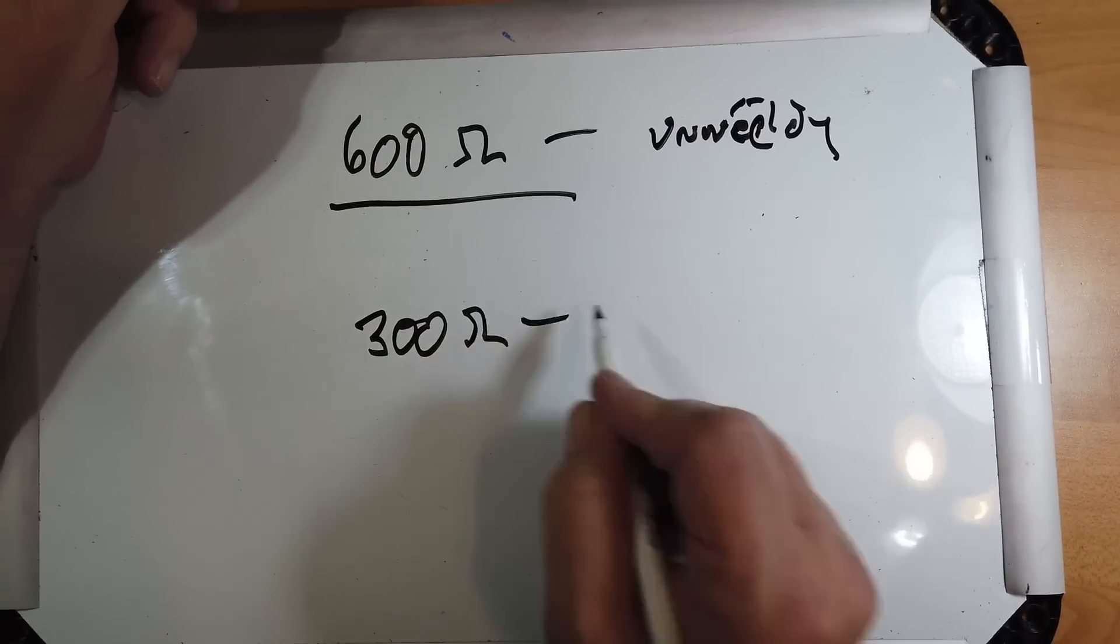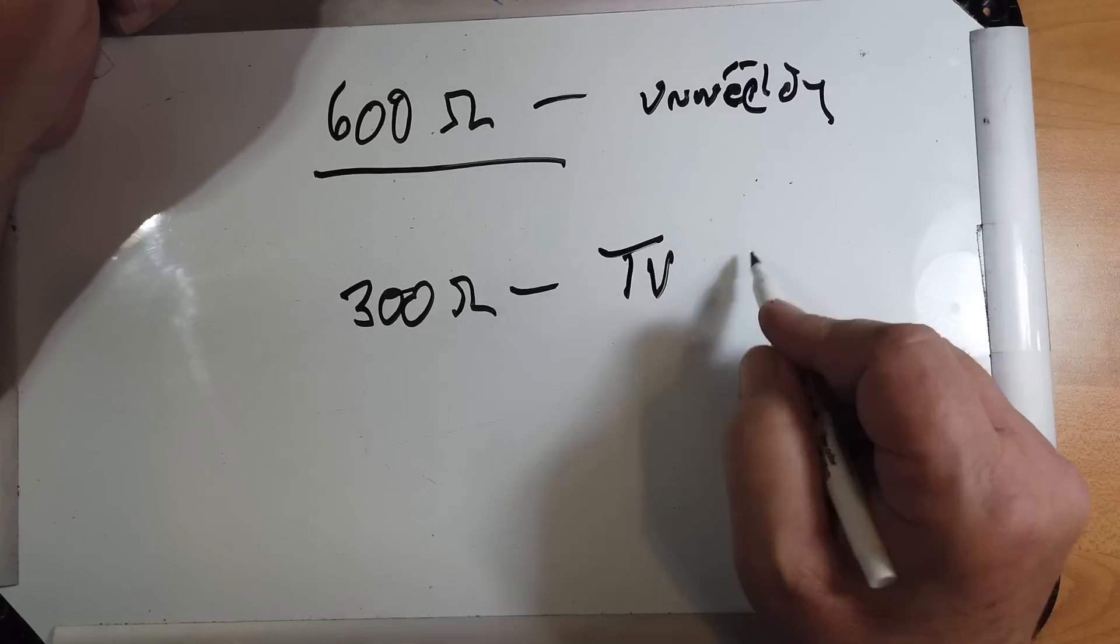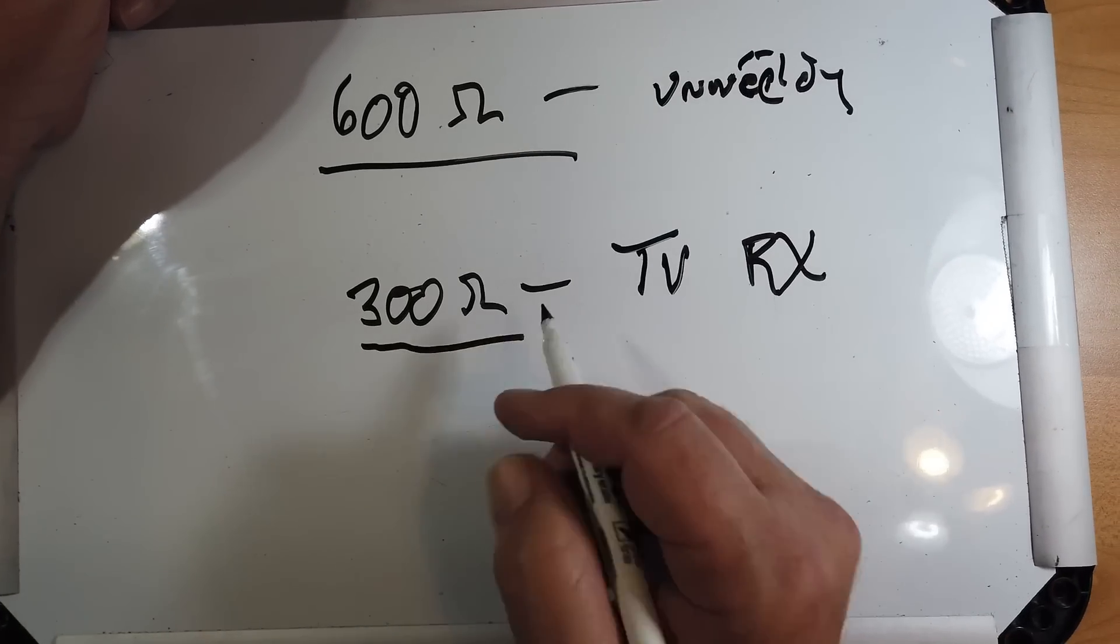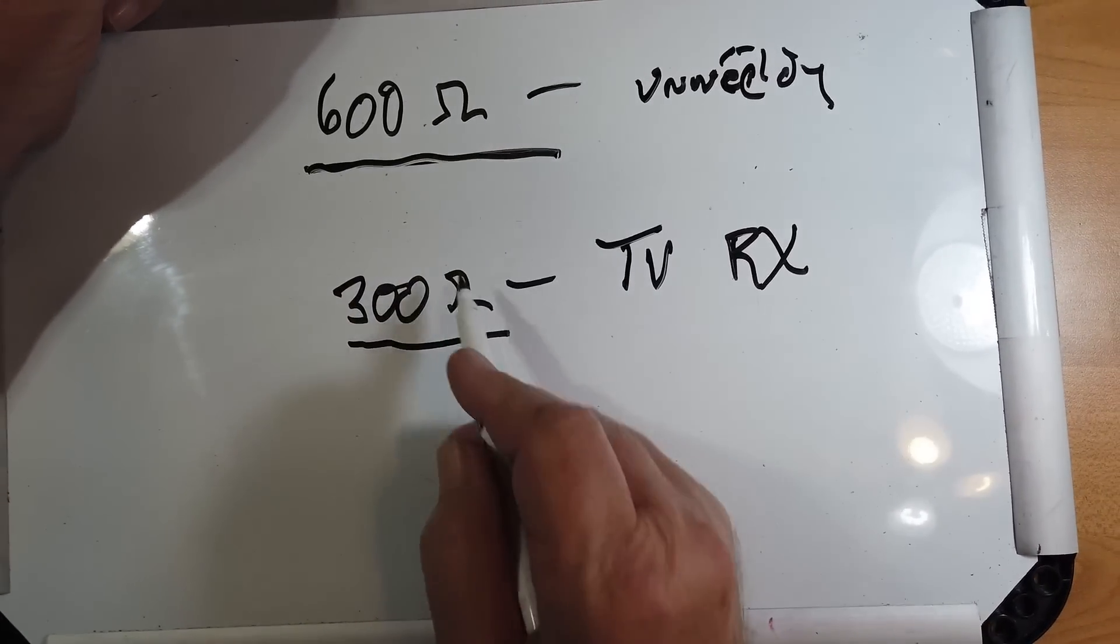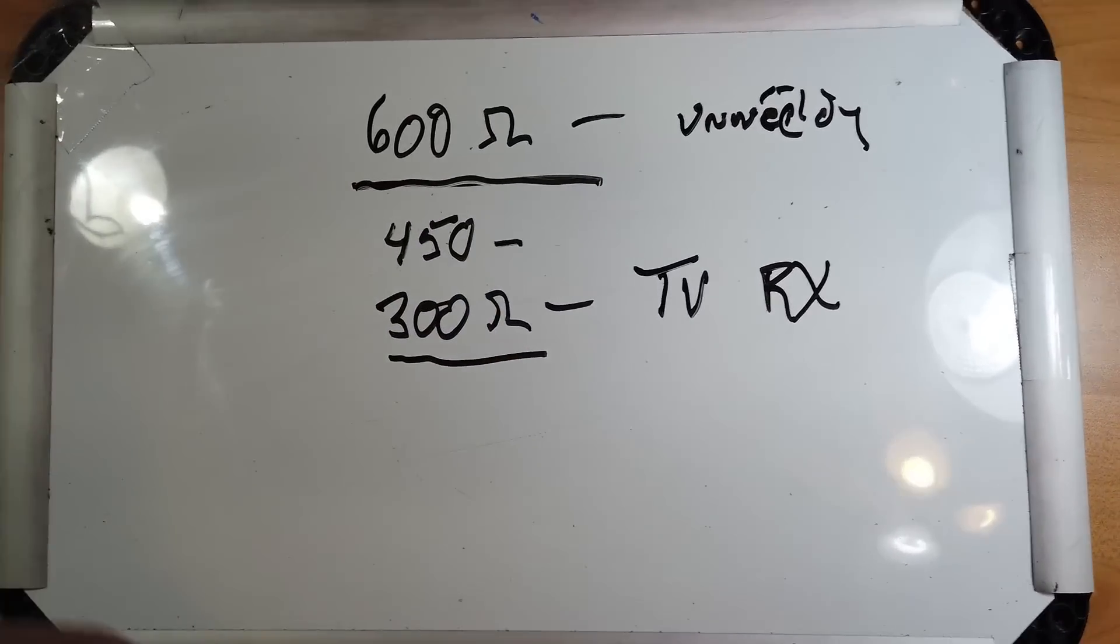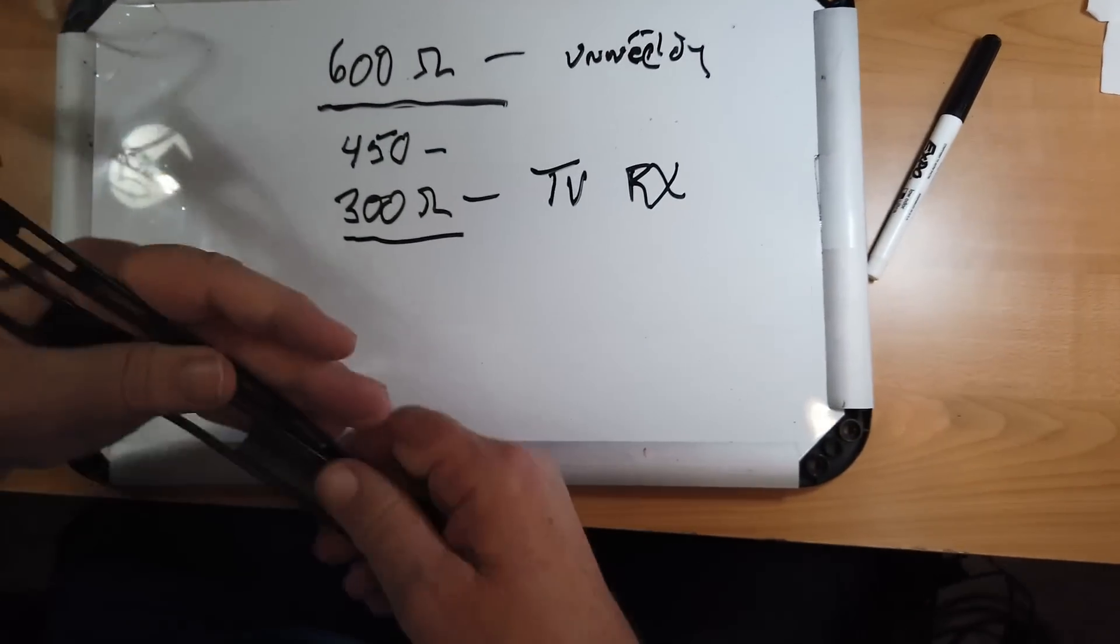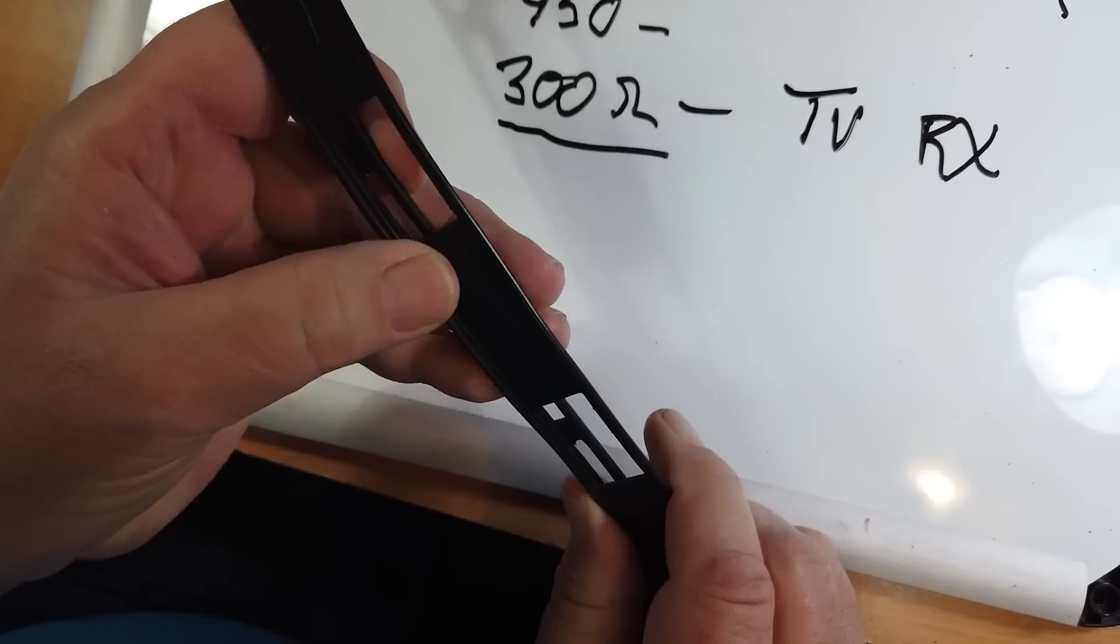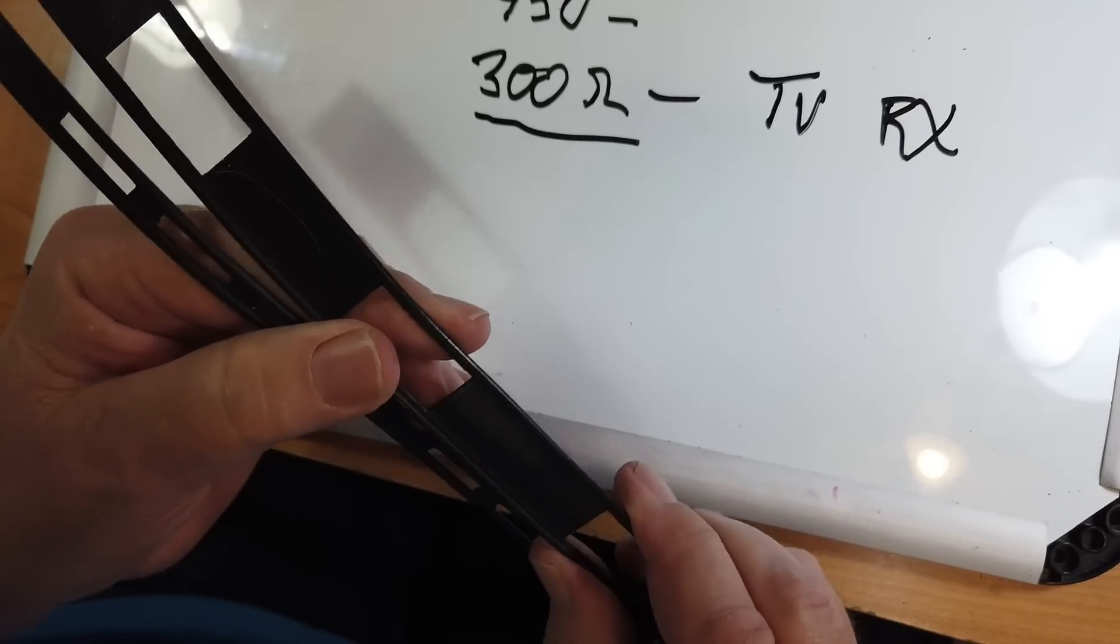The 300 ohm is the twin lead for television receive. But the thing is that the wires are so close together, if you put a lot of power through it, it'll arc over. So that's why the 600 became popular. The 450 came out when it was convenient to manufacture something, and you see that this is much broader, wider than the twin lead. Much less of a chance of it arcing over with higher power.